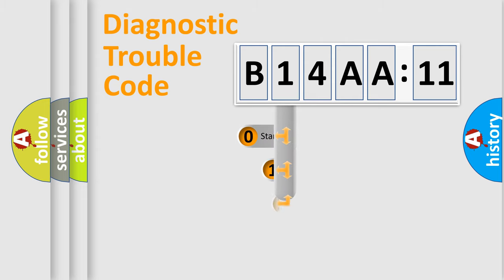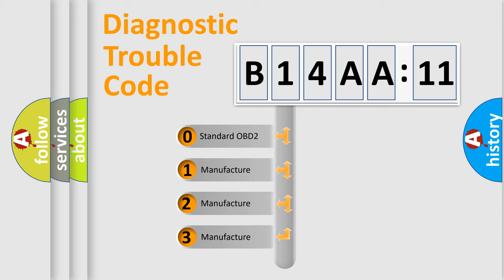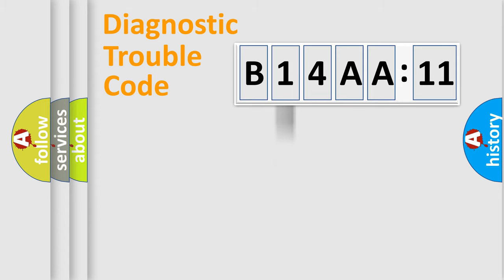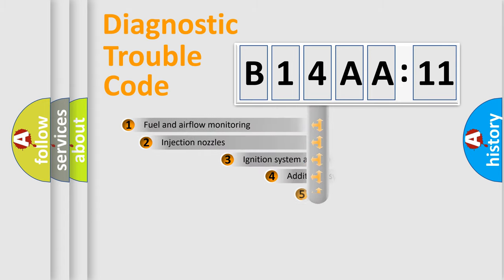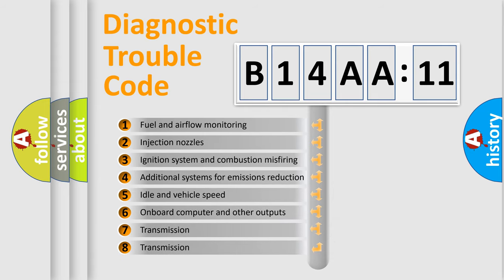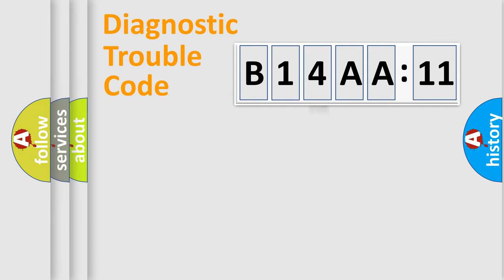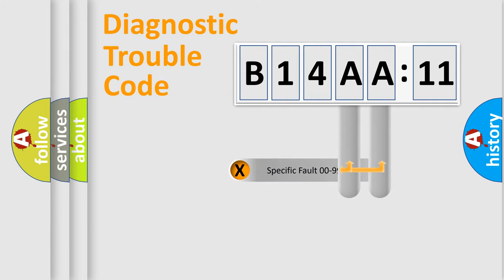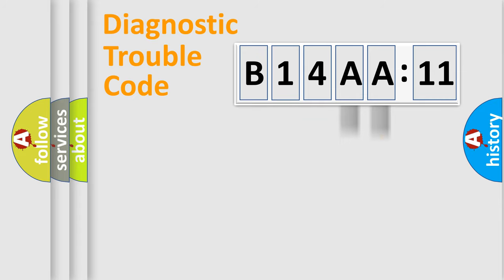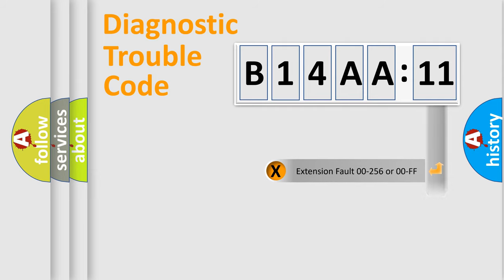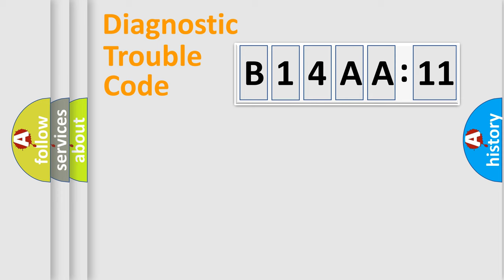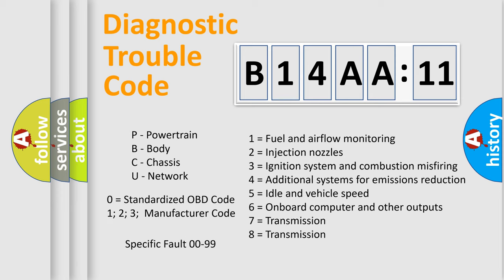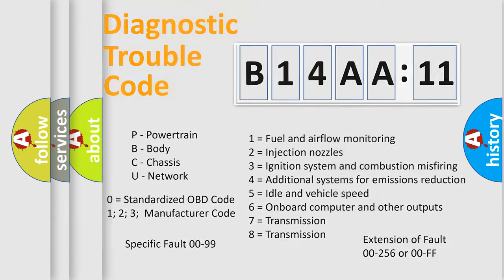This distribution is defined in the first character of the code. If the second character is expressed as zero, it is a standardized error. In the case of numbers 1, 2, or 3, it is a more specific expression of a car-specific error. The third character specifies a subset of errors. This distribution is valid only for the standardized DTC code. Only the last two characters define the specific fault of the group. The add-on to the error code serves to specify the status in more detail — for example, a short to ground. Such a division is valid only if the second character is expressed by the number zero.